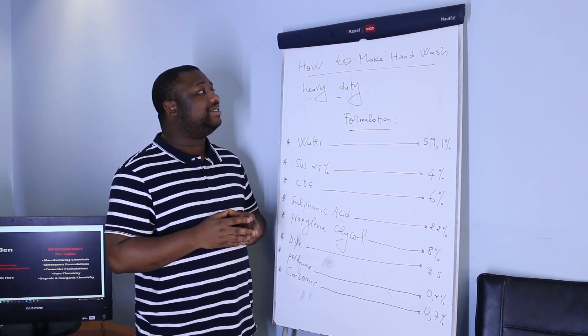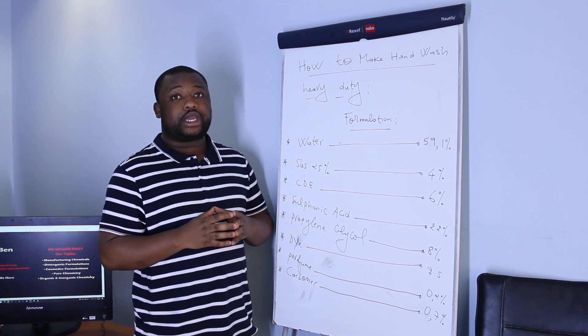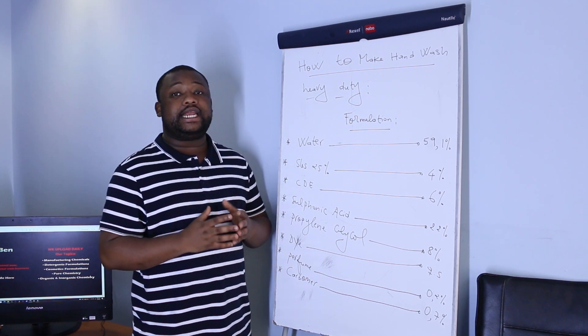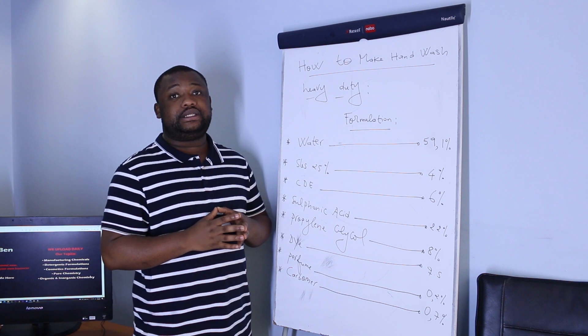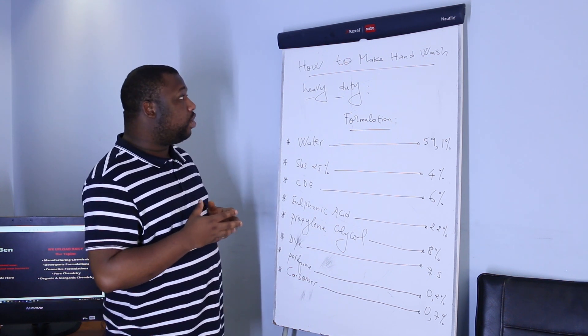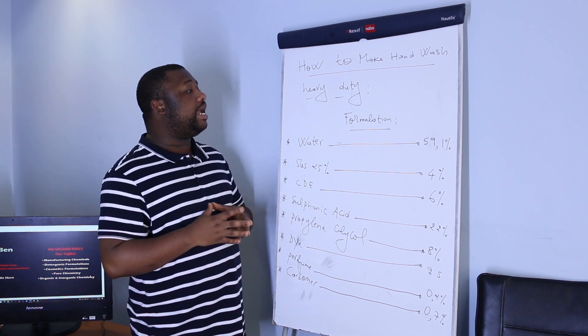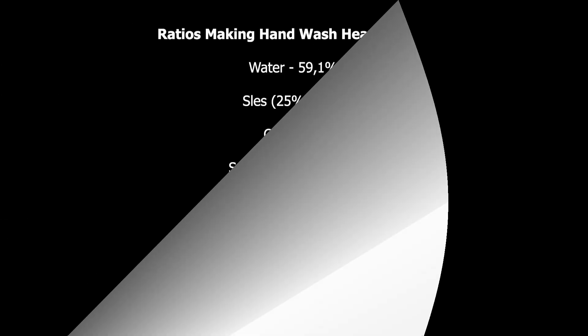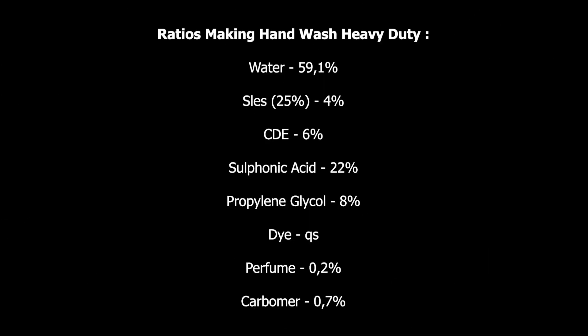We're going to state the ingredients and give their respective ratios. Here we go. What are the ingredients we need to manufacture hand wash heavy duty? We have water, this should be 59.1% of the total volume. SLES with a strength of 25%, this should be 4% of the total volume. CDE 6% of the total volume. Sulphonic acid 22% of the total volume.